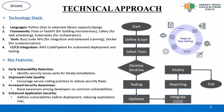Technology stack — Languages: Python, Django frameworks, Flask or FastAPI, Celery, Kubernetes. Tools: BurpSuite APIs, Docker. CI/CD integration: AWS code pipeline for automated deployment and testing.